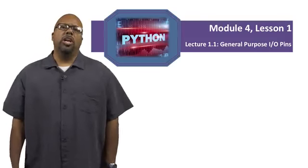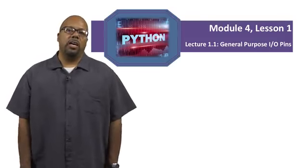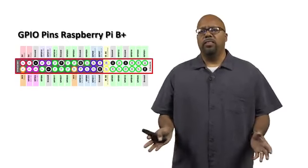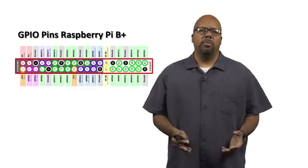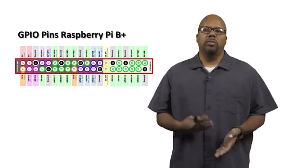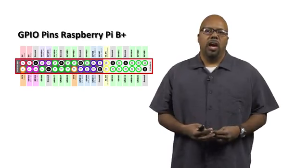This lecture is about the general purpose input output pins on the Raspberry Pi B+. This is a layout of what the Raspberry Pi's pins look like. Now there are several different Raspberry Pis. We're using the Raspberry Pi B+, which has more pins.